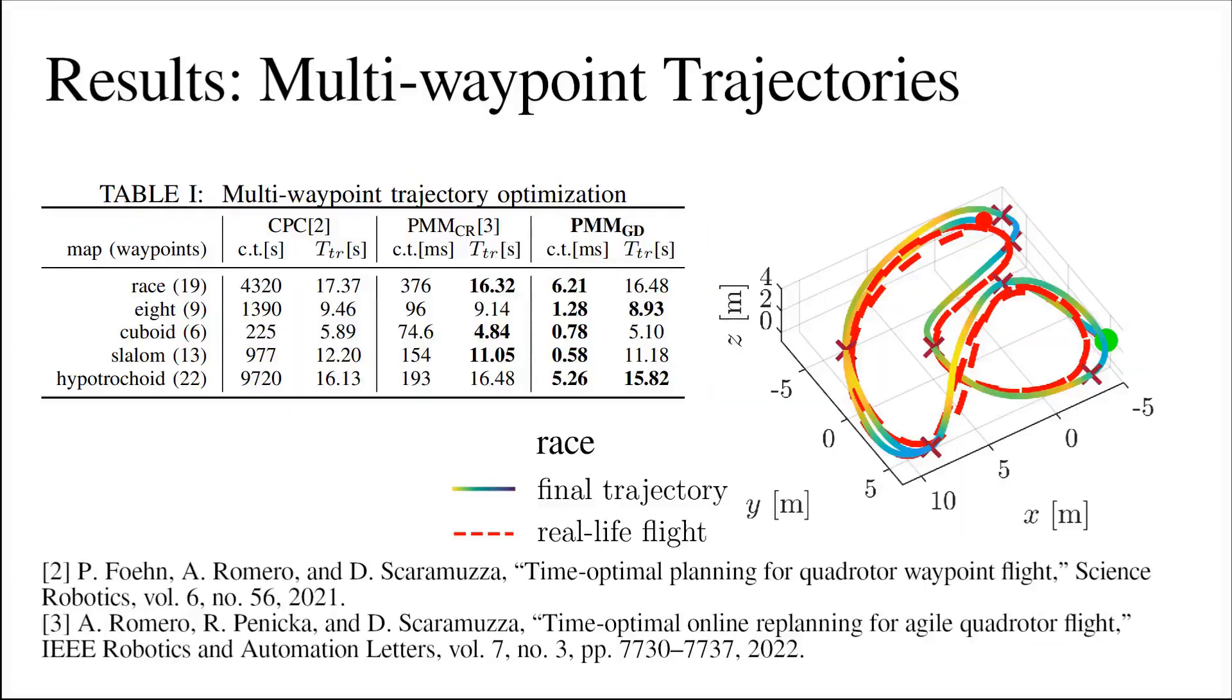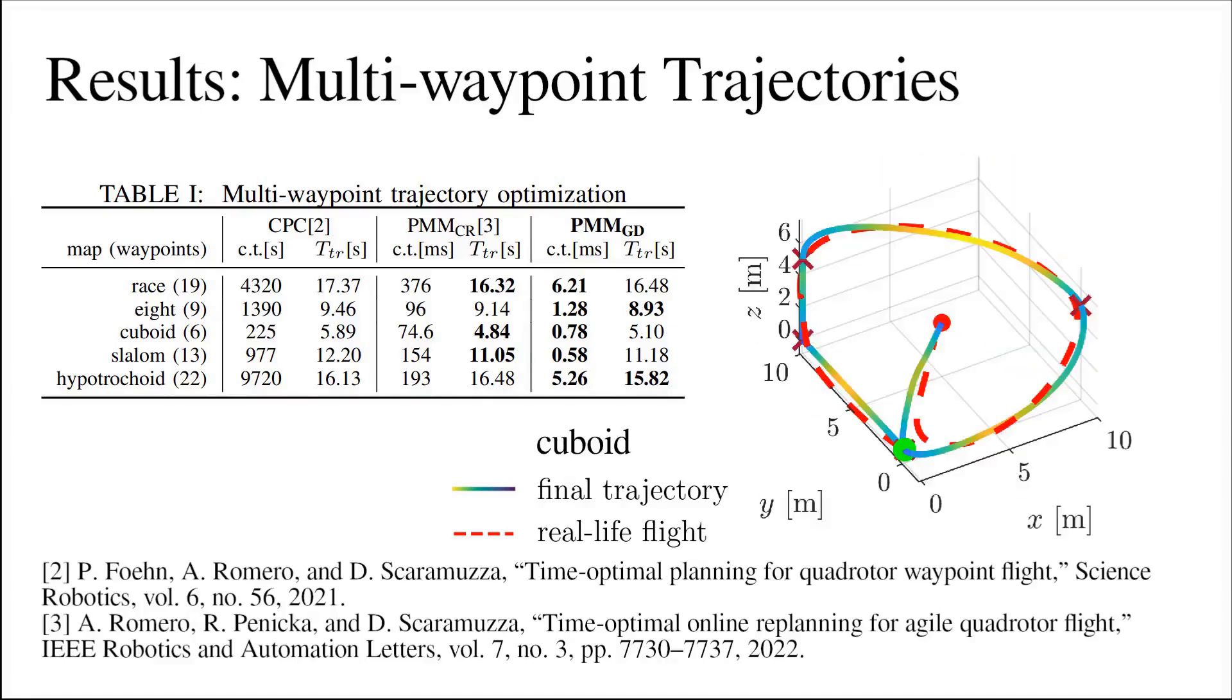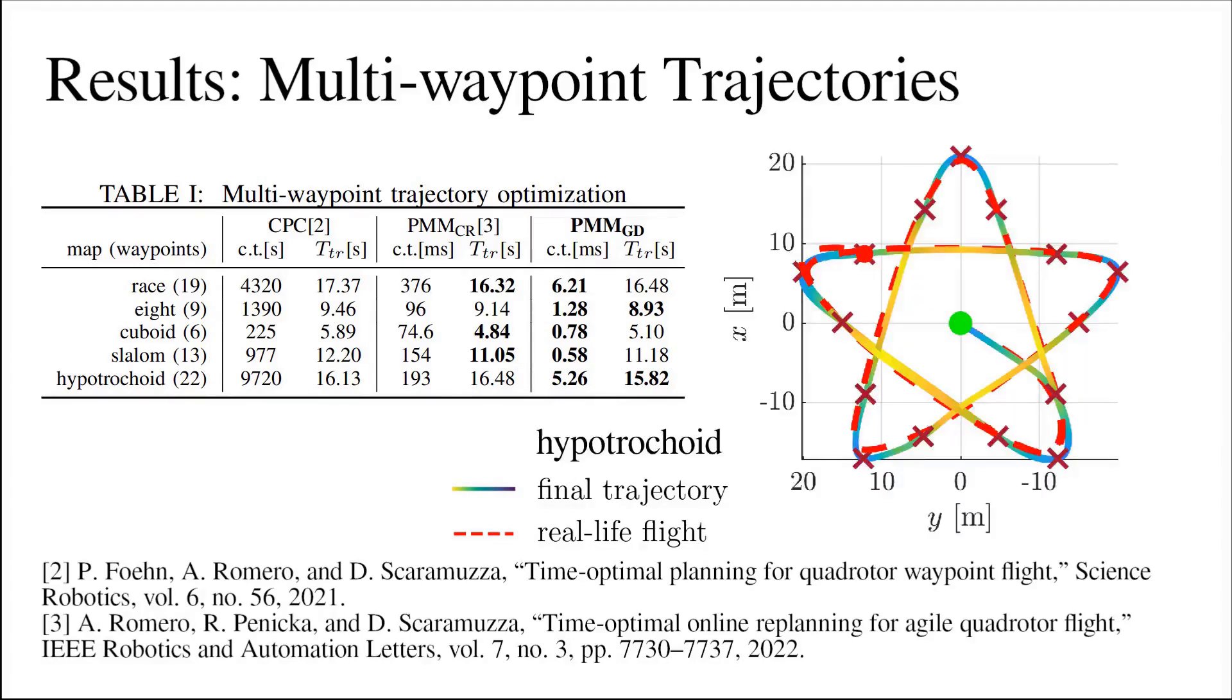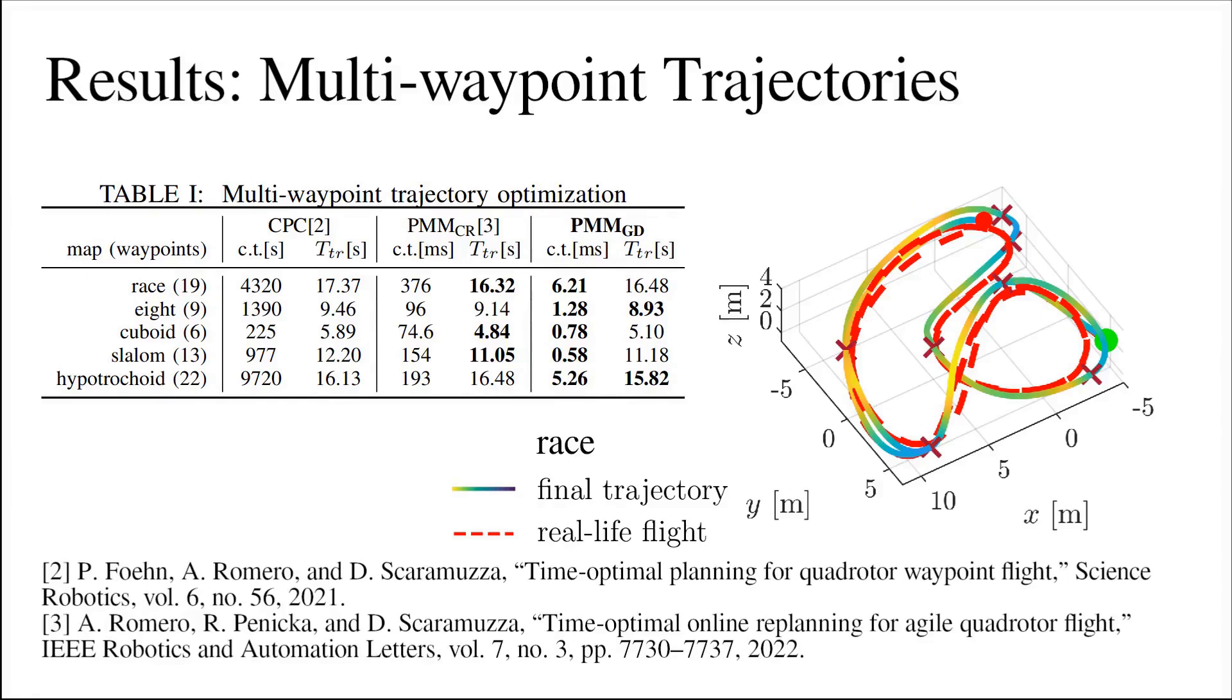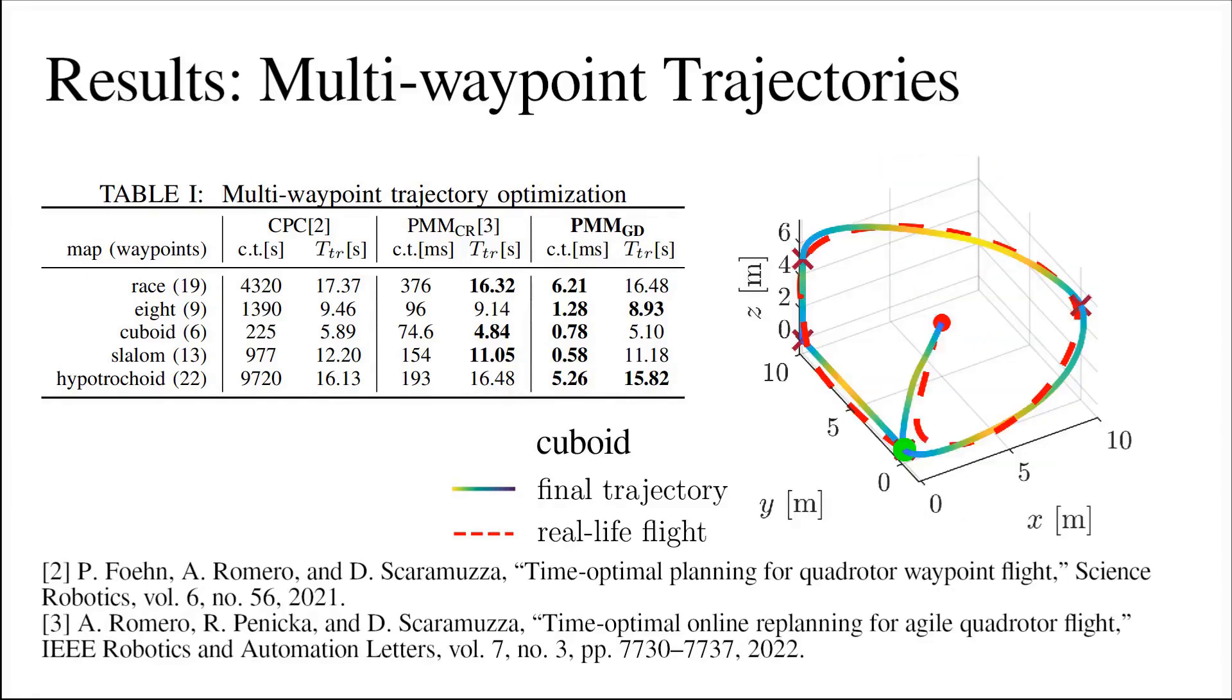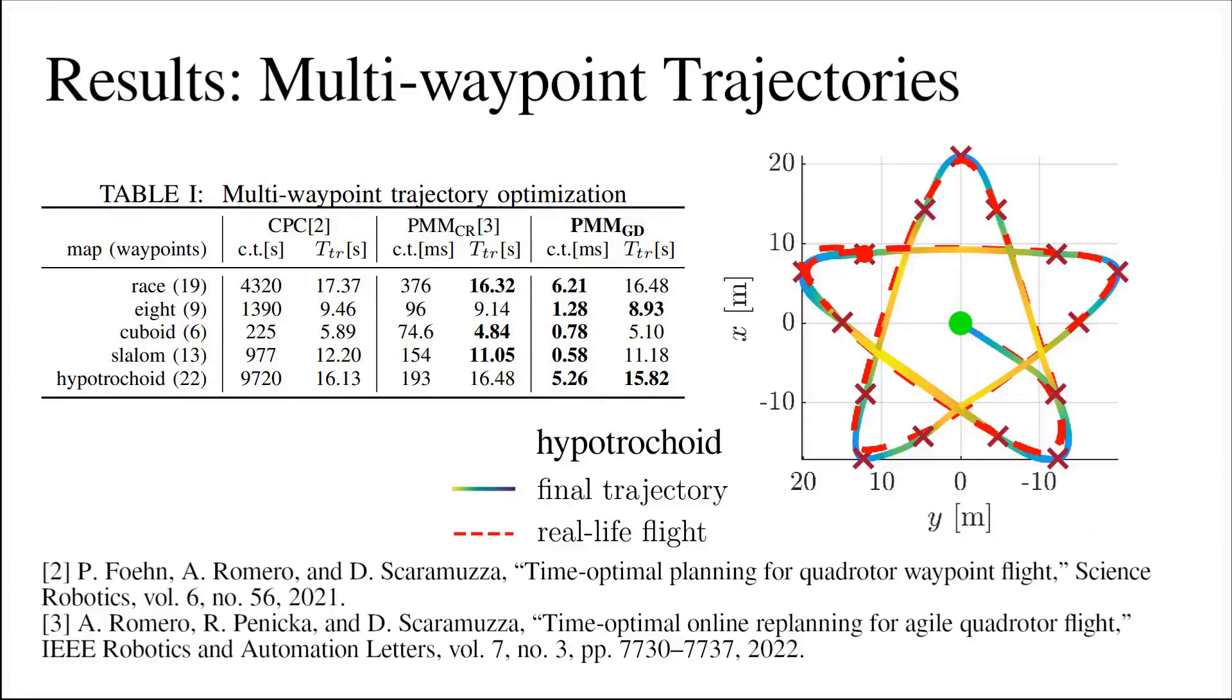We evaluate our multi-waypoint trajectory pipeline by comparing trajectory duration and computational time to sampling-based cone refocusing approach, which also uses point mass model, and CPC, which generates time-optimal trajectories for a full quadrotor model. The performance of said methods is compared on a set of five scenarios, as shown.